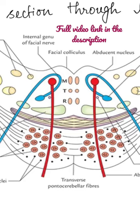The corticospinal fibers converge towards the lower part of the pons and form the pyramid in the medulla.